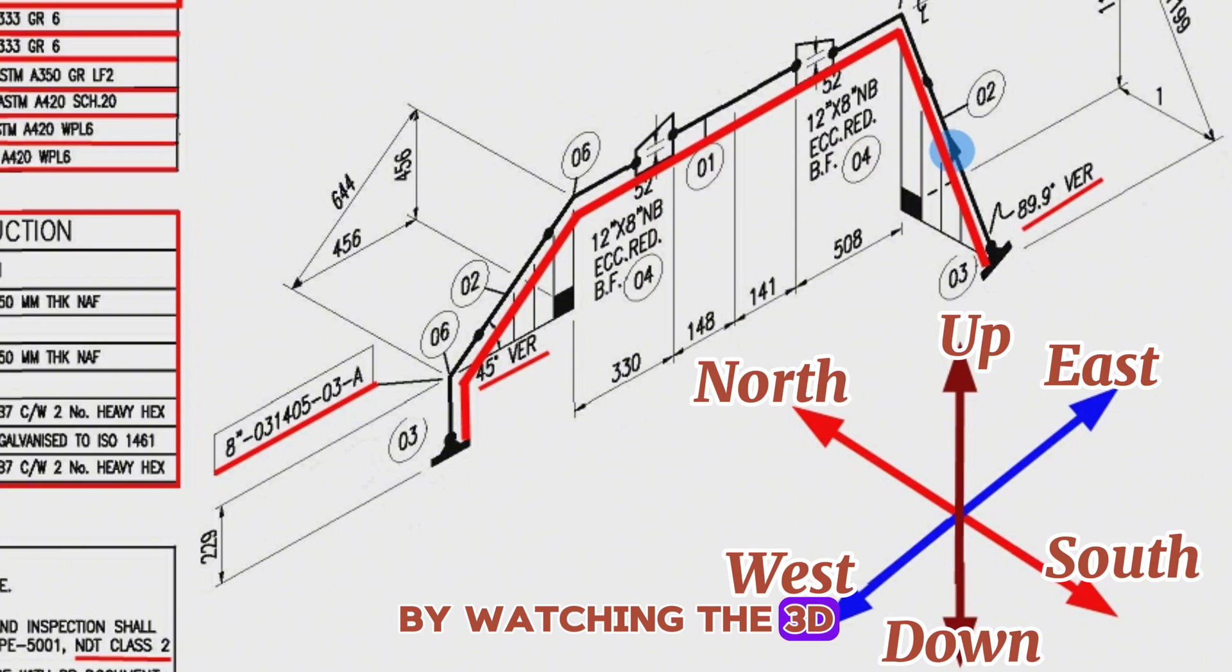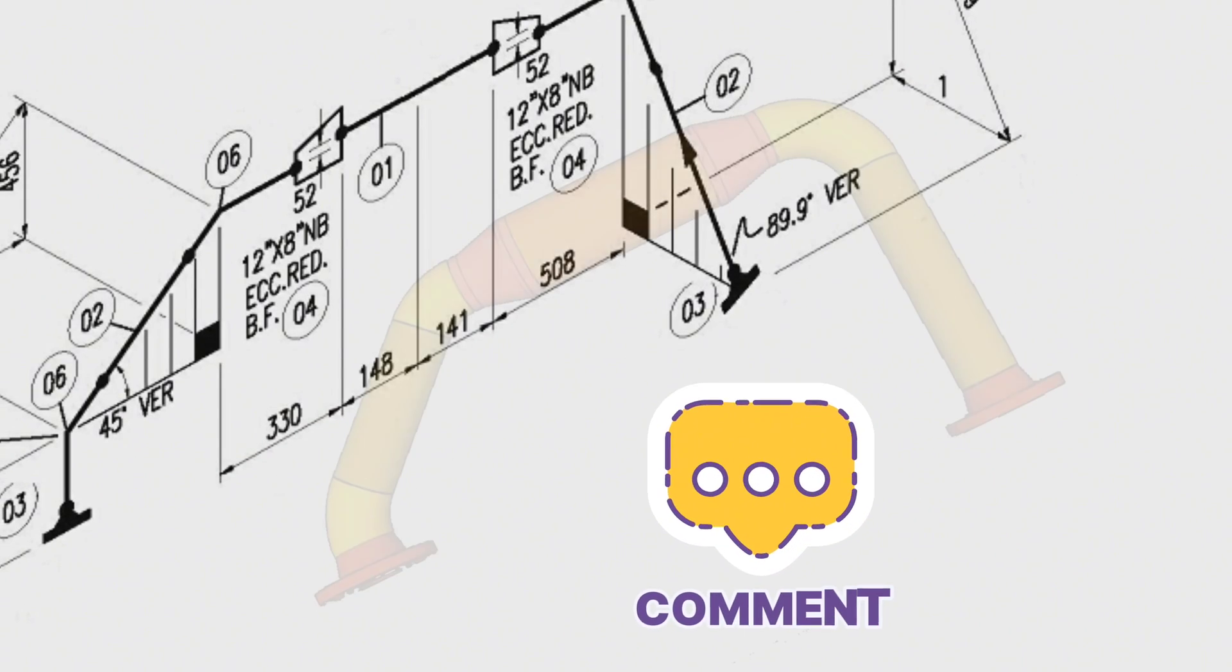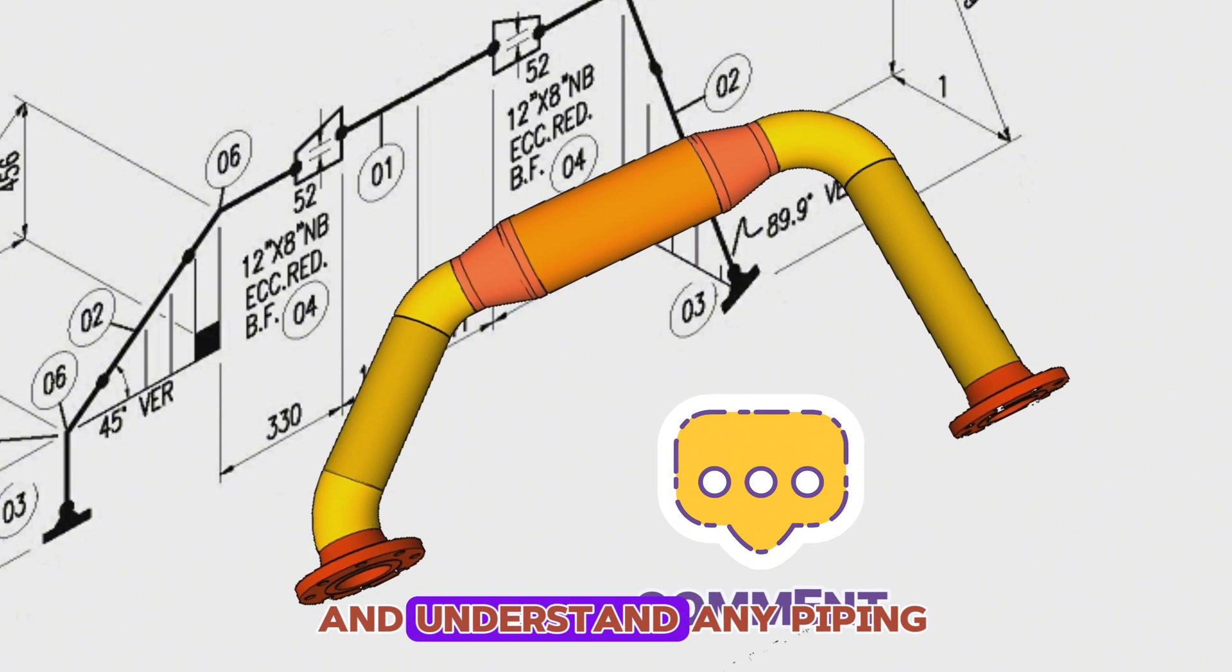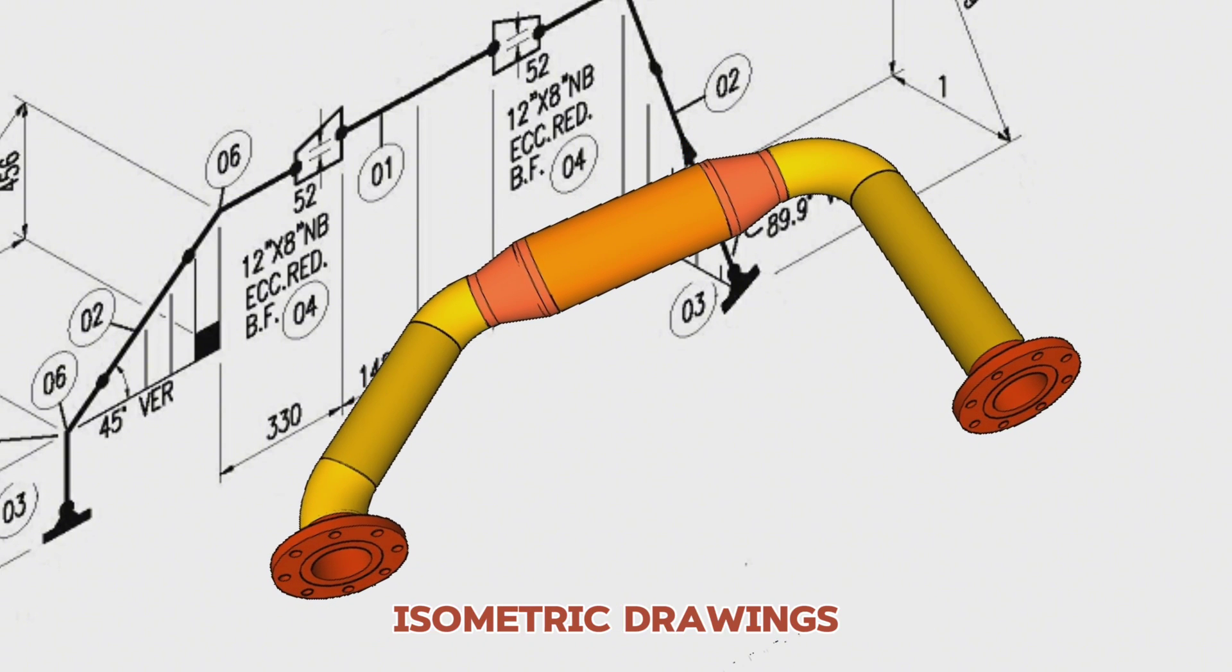By watching the 3D view of this pipeline, it will be easier to read and understand the isometric drawing of this pipeline. By using this method, you can easily read and understand any piping isometric drawings.